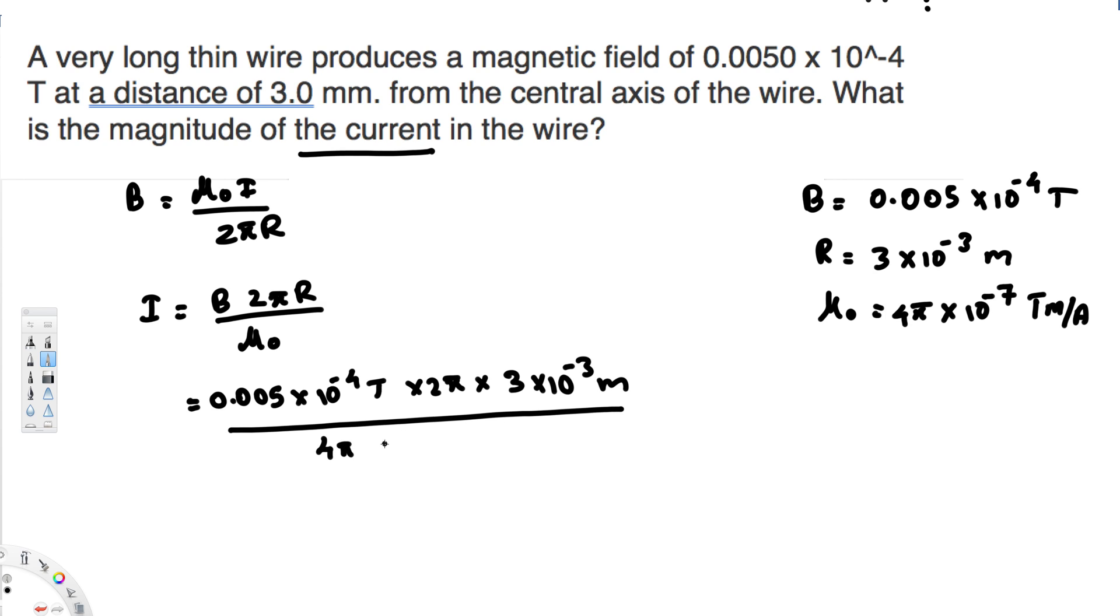...4π × 10⁻⁷ tesla·meter per ampere. If you notice, we have 4π and 2π—we can cancel this π. 4π, 2π cancel, we are left with 2. On top we have 0.005 multiplied by 3...